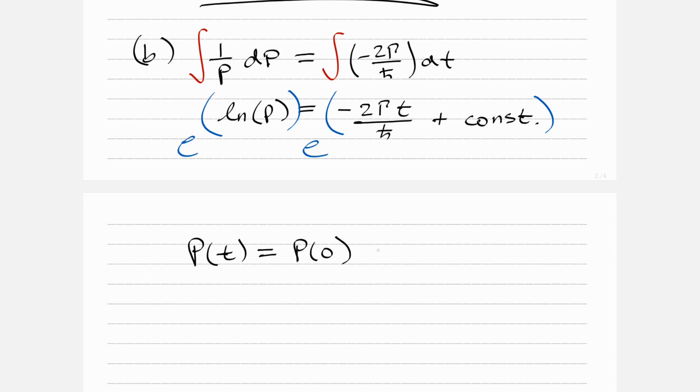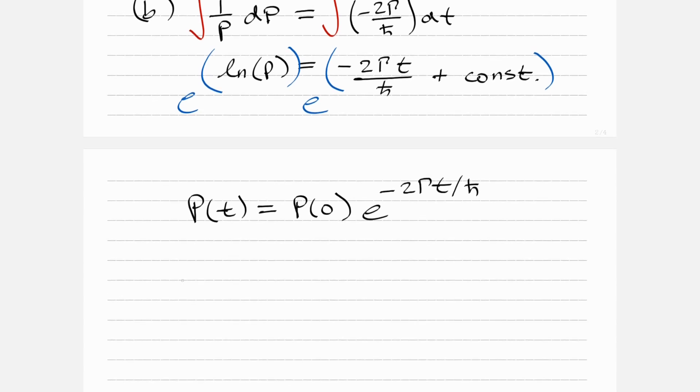In other words, when you plug in t equals 0, e to the whatever, e to the 0 just goes to 1, and so we're left with P(0). That's why we're going to call it P(0).